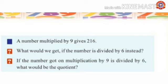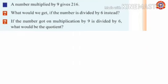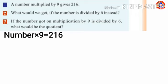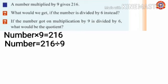If the number got on multiplication by 9 is divided by 6, what would be the answer? A number multiplied by 9 gives 216. The number is not given, so we write: number into 9 equals 216. To find the number, divide 216 by 9.